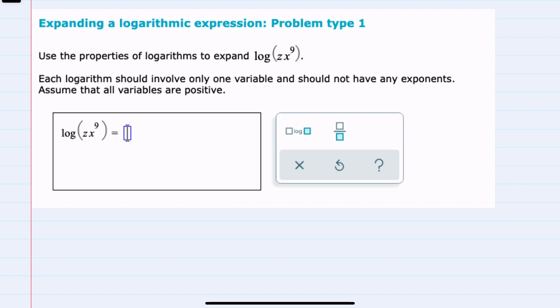In this video, I'll be helping you with the ALEKS problem type called Expanding a Logarithmic Expression, Problem Type 1. We're asked here to expand the log of z times x to the 9th so that each logarithm has only one variable and no exponents.